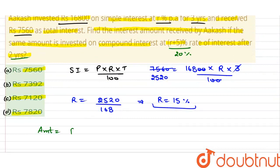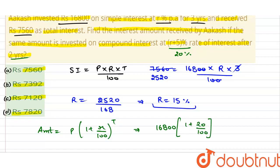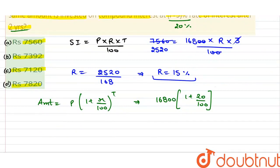Compound interest का formula होता है: Amount is equal to Principal into (1 plus R by 100) to the power T. तो इस condition में principal कितना है? वो 16,800. और rate of interest कितना है? 20 divided by 100, power time कितना है? 2 साल के लिए. तब इसे solve करते हैं. 25 से 5 पे जाएगा. तो यहाँ पे लिख सकते हैं कि amount is equal to 16,800 into — यह कितना हो जाएगा? 6 by 5. तो 36 upon 25.